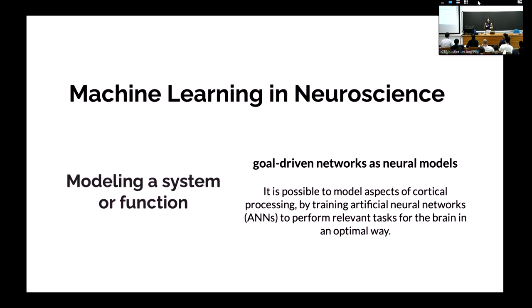In specific, we work on neuroscience research and visual inference tasks, in particular of the primary visual cortex. The machine learning tools will come as a form of modeling a system function. Our main hypothesis is that we will have artificial neural networks as neural models, and we will think it is possible to model aspects of brain tasks by training these artificial neural networks optimally and then compare the emerging results to actual biological and physiological data.